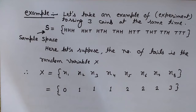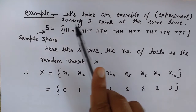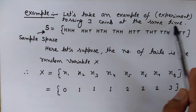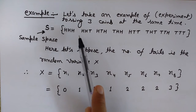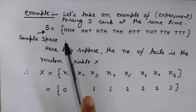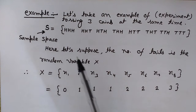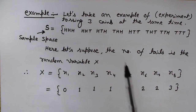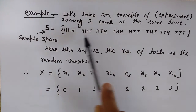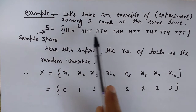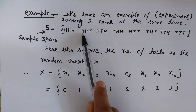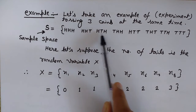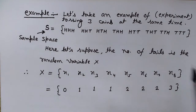Let's make this clearer with the example of tossing three coins simultaneously. The first coin may have either head or tail — two possibilities. The second coin also has two possibilities, and the third coin has two as well. So two times two times two gives eight total combinations. Taking into account the arrangements — for example, two heads can appear in different orders — there are eight distinct outcomes in total. This set of eight outcomes is the sample space.